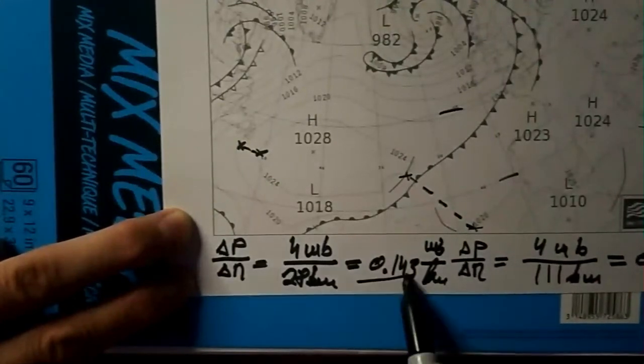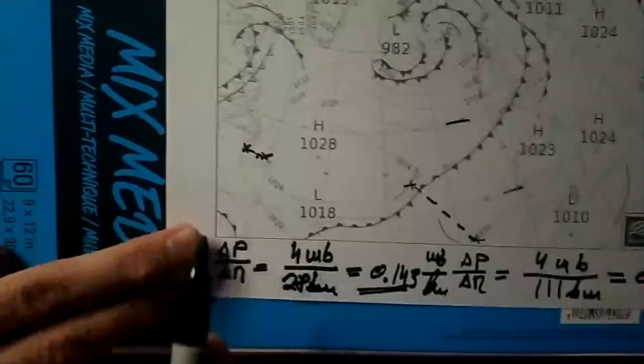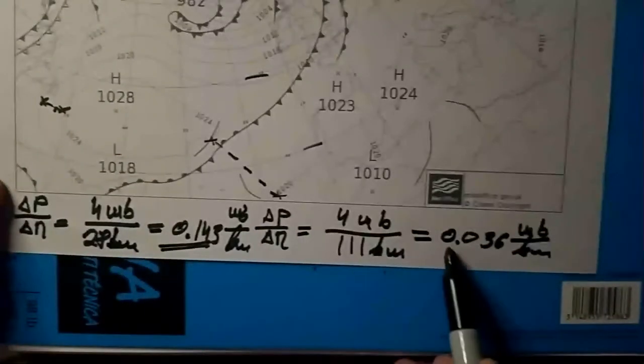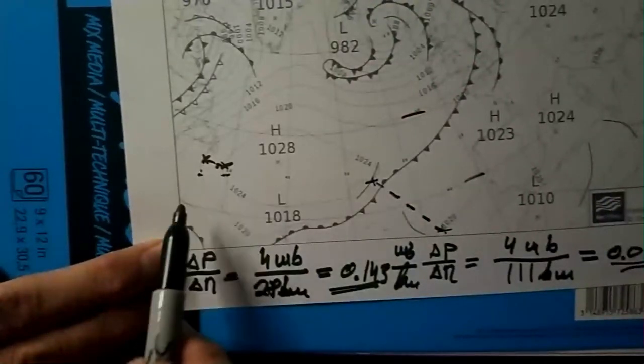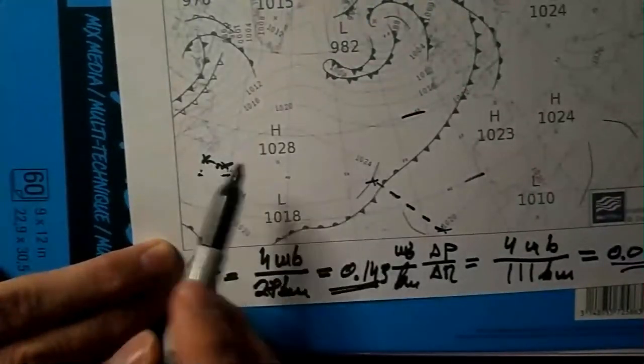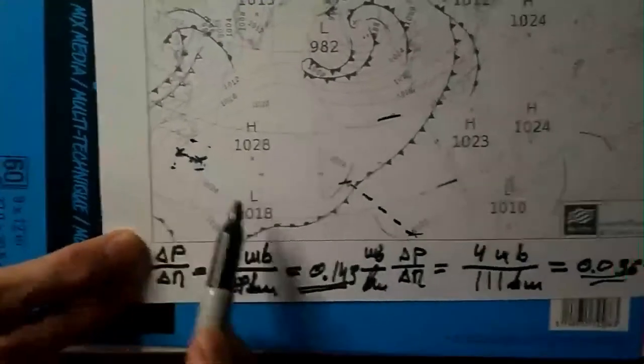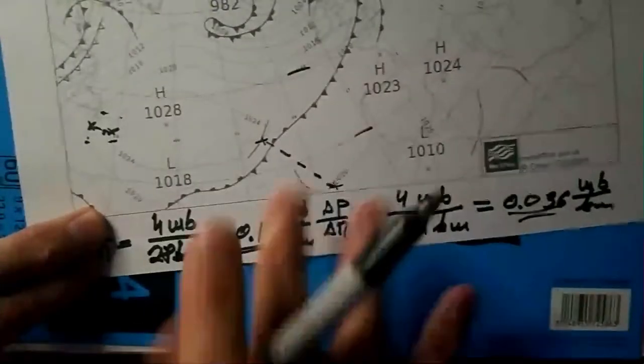What we can conclude is that the pressure gradient in the second case is about 4 times the pressure gradient in the first case, and you can see this by the spacing between isobars — lines of constant pressure. Isobars are much closer together there compared to the first location. So if we have a weather chart and the isobars are very close to each other, the pressure gradient is very strong, and consequently the pressure gradient force is also very strong.